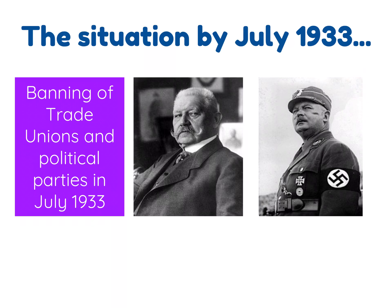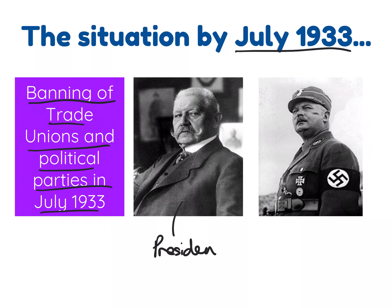By July 1933, Hitler had passed the Enabling Act, which allowed him to bypass the Reichstag and pass any laws he wanted. One of the first laws he passed was the banning of trade unions and political parties. This had increased Hitler's power substantially. Even though President Hindenburg was technically president with more authority than Hitler, in reality this wasn't the case.